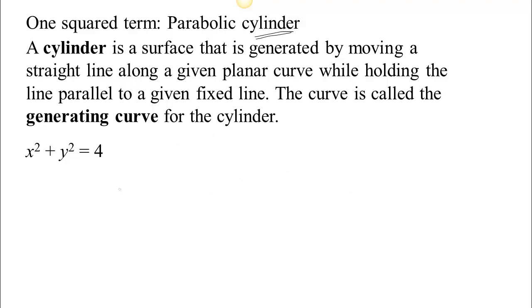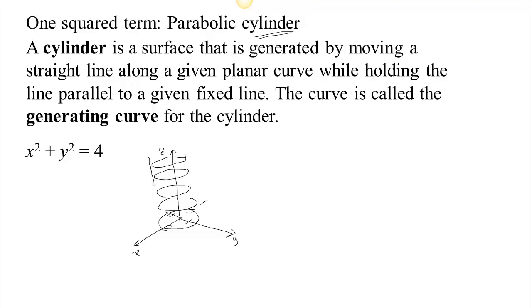When we say cylinder, you probably think of a right circular cylinder, and that is an example. Consider the equation x squared plus y squared equals 4. In two dimensions, that's just a circle. But in three dimensions, we have the constraint that x squared plus y squared must equal 4 no matter what z is — z is free. At z equals 0 you see a circle of radius 2 in the xy plane, and at any other value of z you still see that same circle of radius 2. That is a right circular cylinder — infinite, with no constraint on z. As written, it's just a stack of circles.